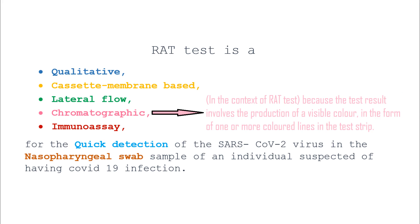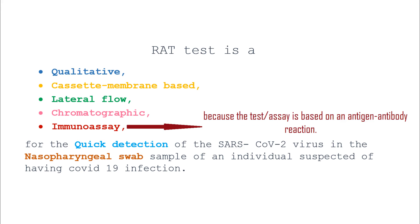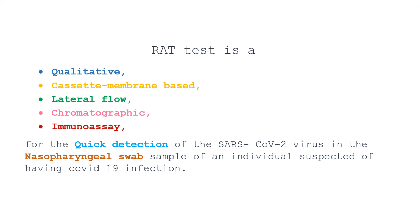It is a chromatographic test because the test result involves the production of a visible color in the form of one or more colored lines in the test strip. It is an immunoassay because the test is based on an antigen-antibody reaction. It is a quick test because the test results are typically ready in less than 30 minutes. It is a nasopharyngeal swab test because the sample is taken from the nasopharyngeal region of the nose.